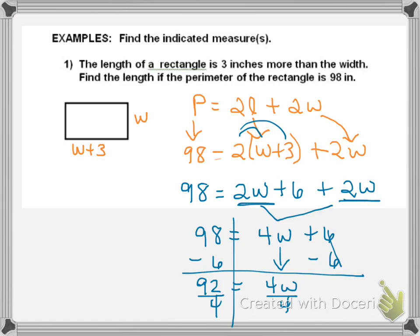Then I divide both sides by 4. So 4 divided by 4 is W. And 92 divided by 4 is 23. So, W is 23. In this case, we're talking inches, so my W is 23 inches.